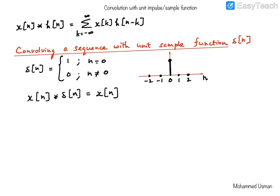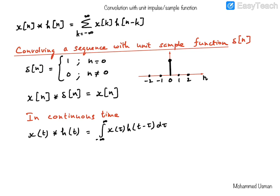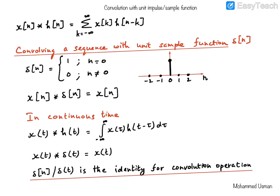A similar argument applies to continuous time convolution as well. What we have shown here is the convolution operation for the discrete time case; similar things apply for continuous time convolution. The convolution in continuous time is given by this integral expression. Just as in the discrete case, the convolution of a continuous time function x of t with the unit impulse function delta of t will result in x of t itself. That means delta of t, the unit impulse function in continuous time, or the unit sample function in discrete time, is the identity for the convolution operation.